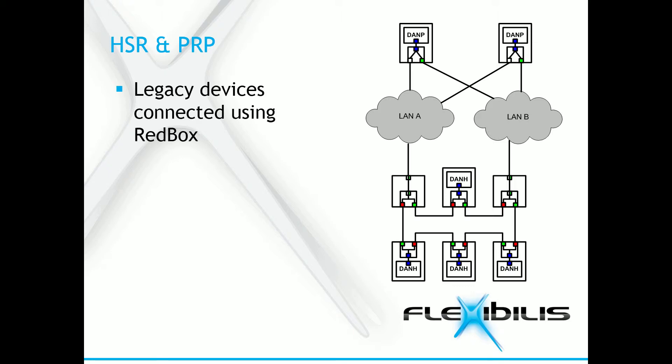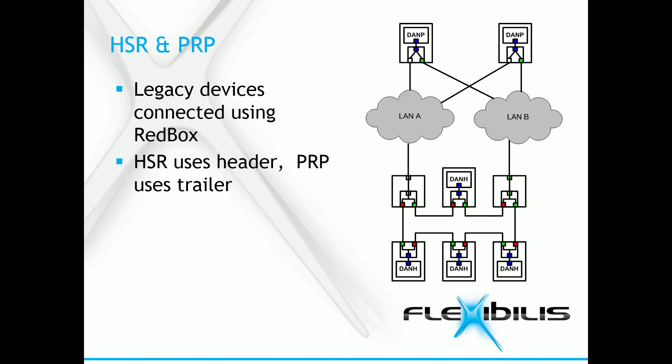I will tell more about how to connect devices not supporting HSR or PRP to an HSR PRP network. With HSR, the legacy devices are always connected using a red box. To a PRP network, it is possible to connect legacy devices directly, but red box is the recommended method. This is because a device connected to only local area network A or local area network B cannot communicate to the devices in the other local area network. PRP devices are able to communicate with legacy devices directly because PRP uses a trailer, and the trailer is ignored by them. HSR uses a header, and because the header is in front of the packet, the legacy devices do not understand it.